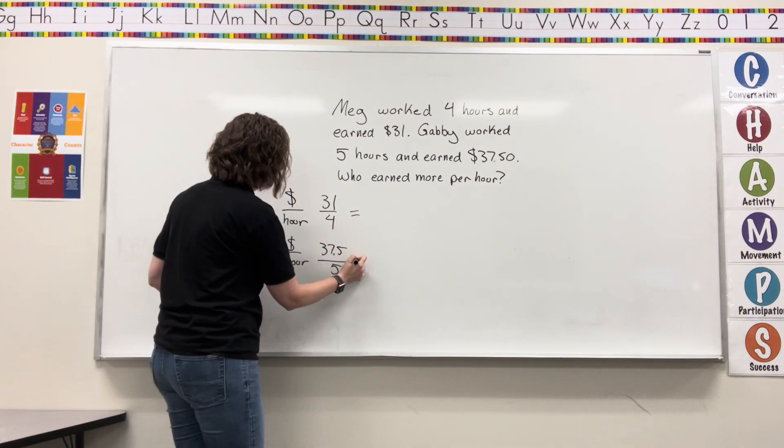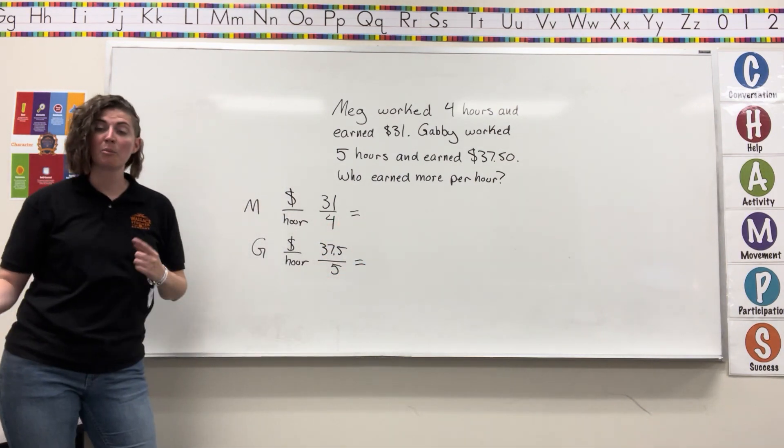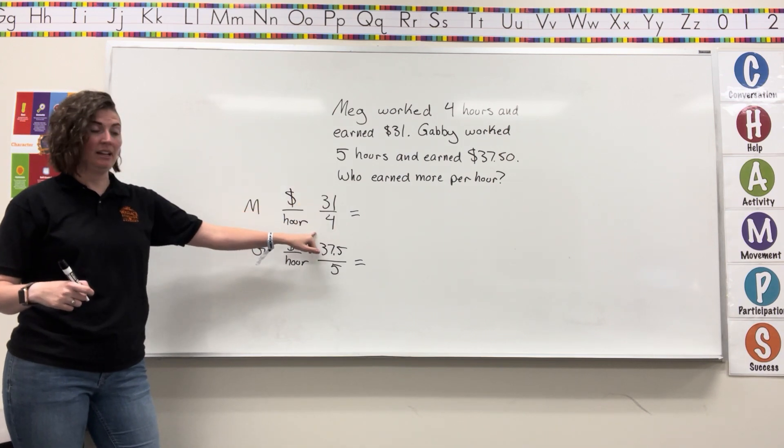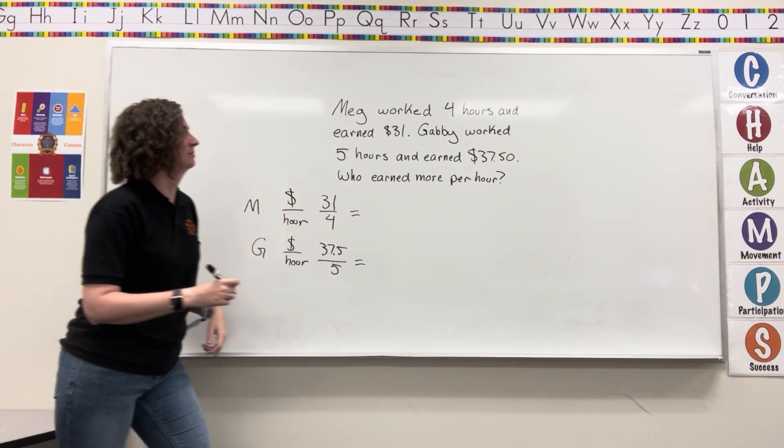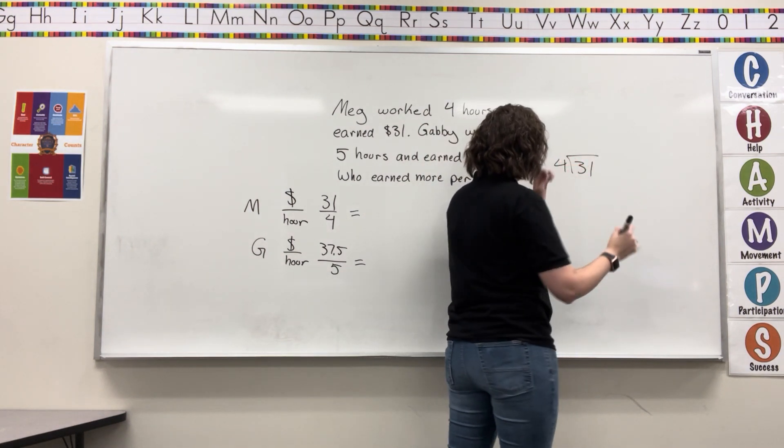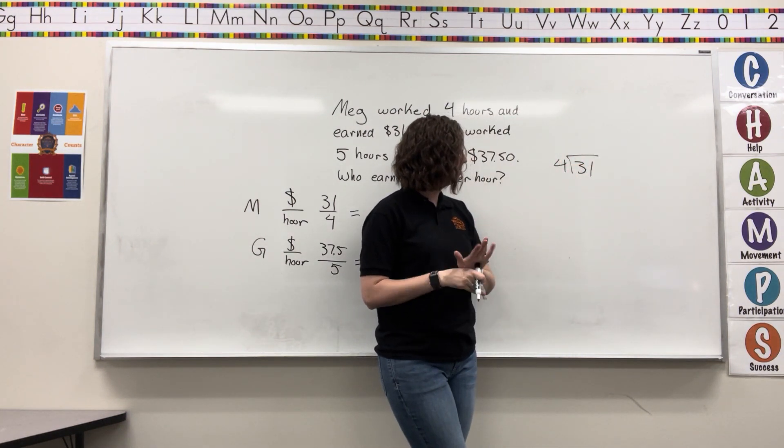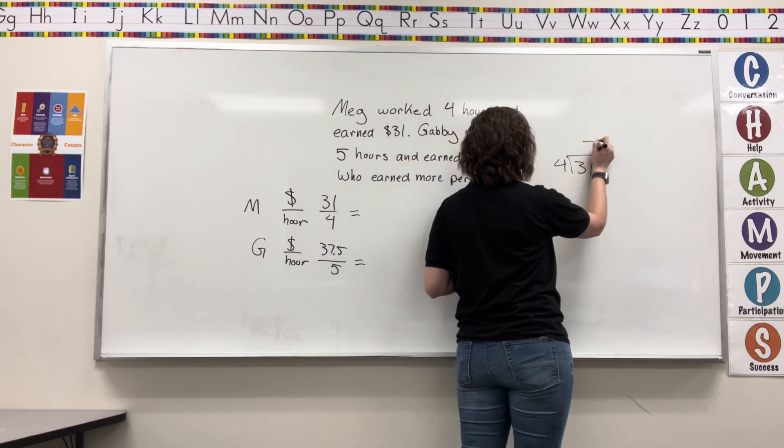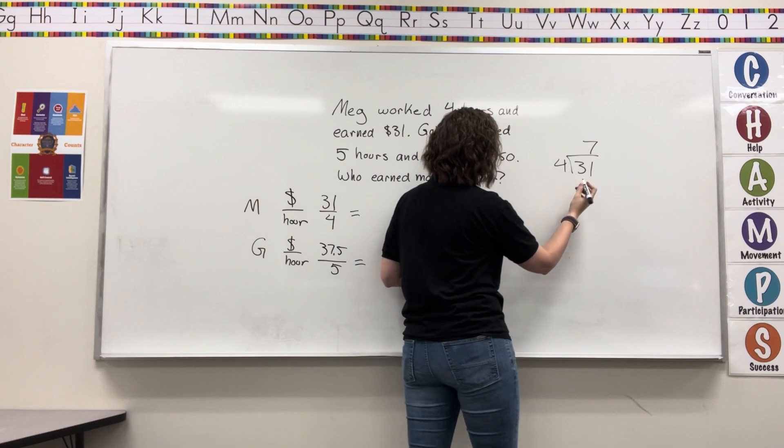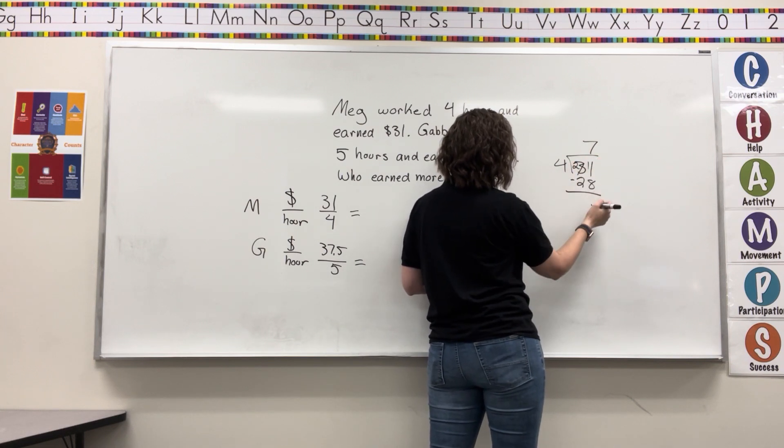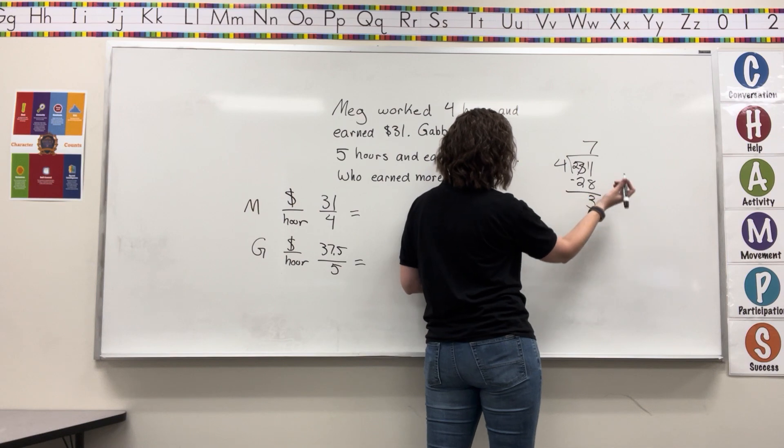Now we're going to simplify those down to the unit rate per hour or per one hour. We can do that by dividing. Thirty-one divided by four. Four fits into thirty-one seven times. Seven times four is twenty-eight. We subtract. Get three.